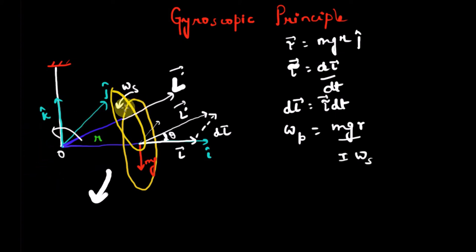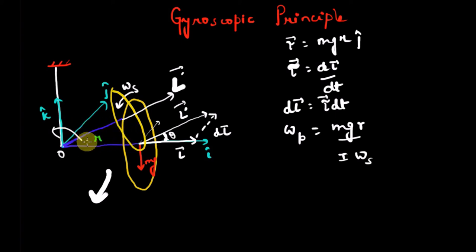If we reverse the direction of the initial angular velocity — so instead of counterclockwise, the disc spins clockwise — the direction of precession reverses. The disc will start rotating about k̂ in the opposite direction.